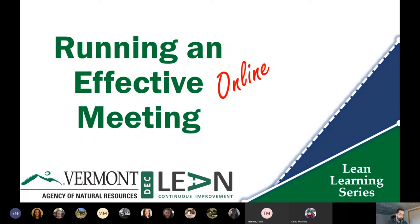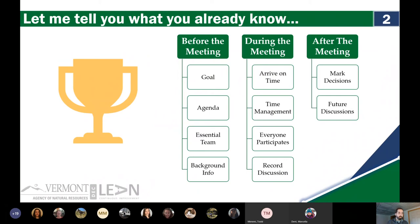I want to start where a lot of these trainings typically end, which is a bunch of stuff you probably already know. These are the things that you should do or have for your meeting in order for it to be effective. So before the meeting, you want to have a goal, you want to have an agenda, you want to have an essential team with just the necessary members, and you want to have circulated background information before it so everyone can arrive well informed.